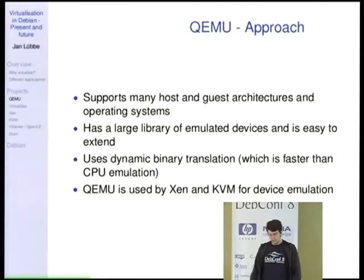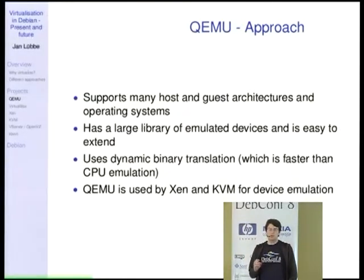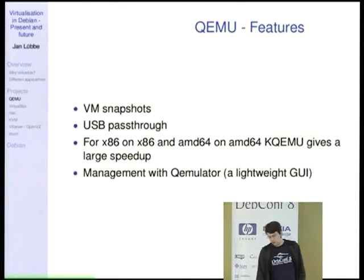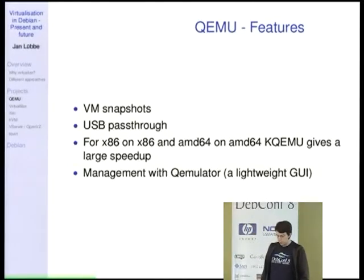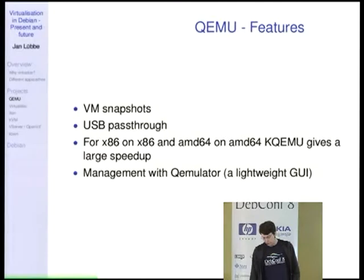There's QEMU, which is an emulator, has been around for a long time, emulates a lot of hardware for different architectures and runs on several different architectures. It uses something called dynamic binary translation — it looks at the code running in the guest, translates it to native code, and stores this native code. The device library is used for Xen, KVM, and VirtualBox also. It already can do snapshots and USB pass-through for guests. There's an additional kernel module which can accelerate guests based on x86 and AMD64 hardware, making it a lot faster than just emulating. There's a basic management interface called QEMulator, also available in Debian.